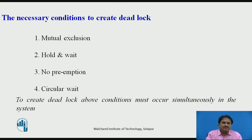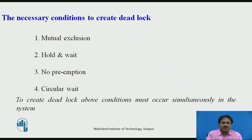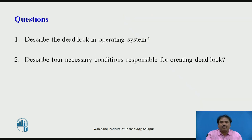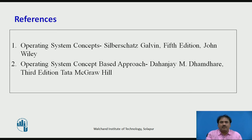To summarize, to create a deadlock there should be four conditions present: first, mutual exclusion; second, hold and wait; third, no preemption; and fourth, circular wait. These conditions should all be present at the same time. If any one is not available, there will not be a deadlock. Possible exam questions include: describe deadlock in an operating system, and describe the four required conditions responsible for creating a deadlock. These are my references. Thank you, friends.